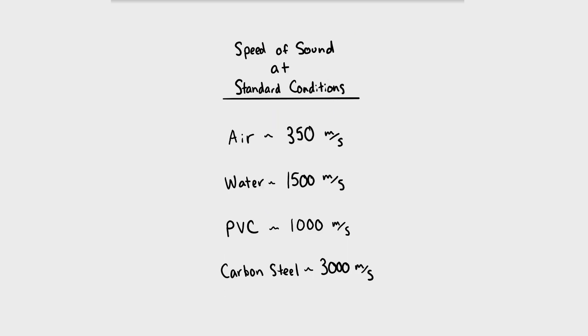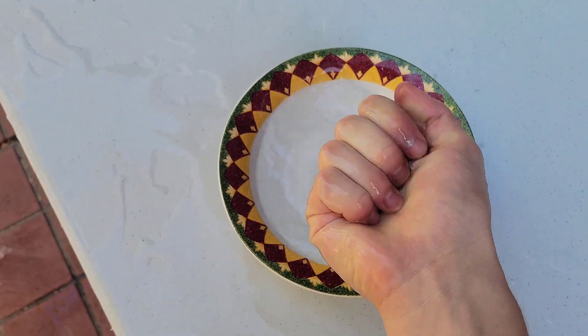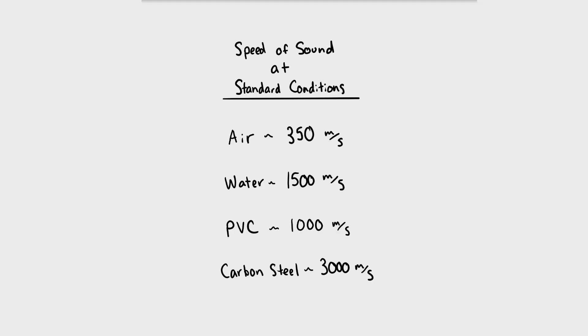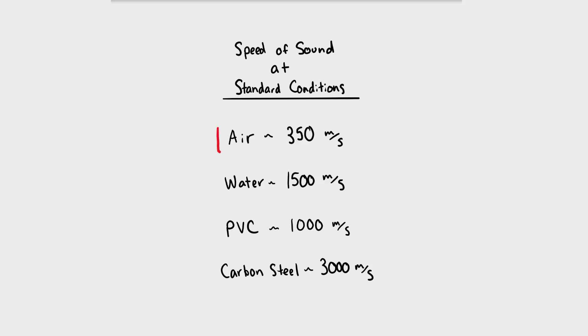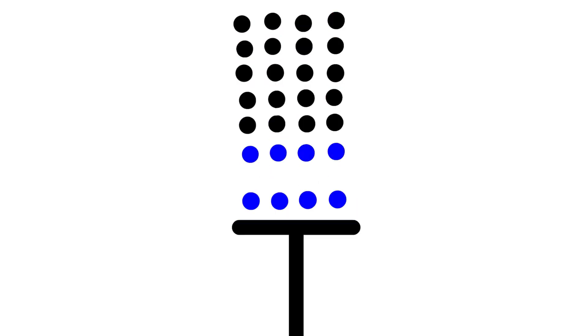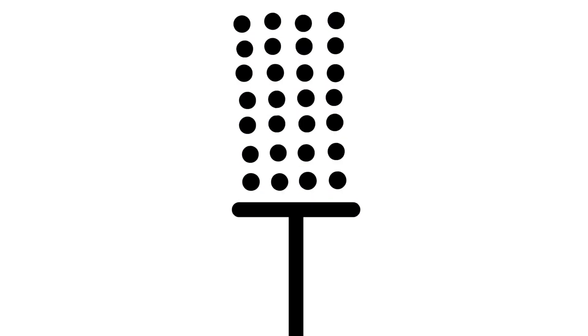Sound travels at a set speed based on the medium that it travels in. Every medium, whether it's air or water or whatever, has different properties such as density and elasticity. Think of it as a chain of molecules connected with springs. If the springs are relatively elastic, they compress more and so it takes more time to affect each concurrent molecule. If they are stiff springs, sound can travel faster. At standard temperature and pressure, sound can travel through air at around 350 meters per second or around 780 miles per hour. Although the energy from a pressure wave clearly travels through the air very quickly, the air molecules themselves hardly move. That's why you don't experience wind every time you hear a noise.